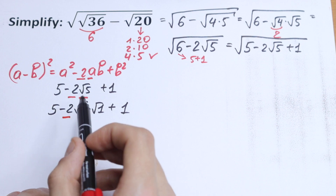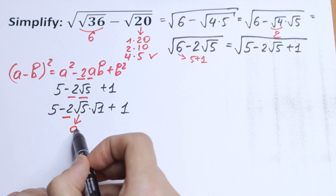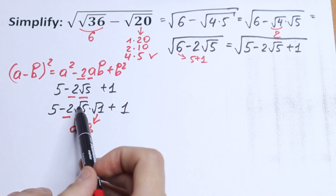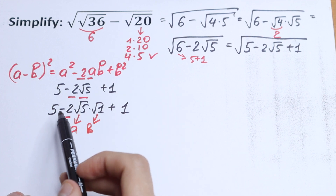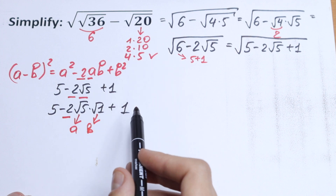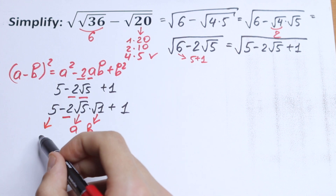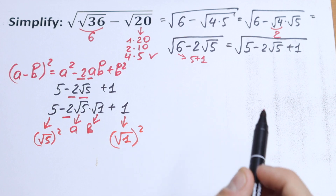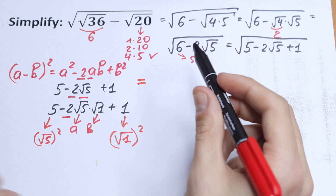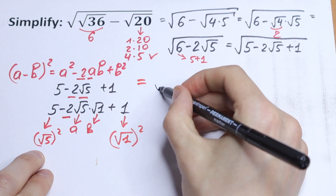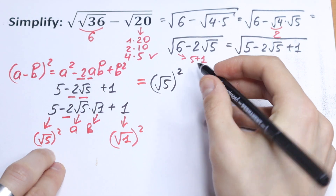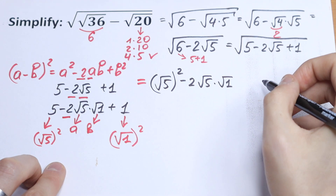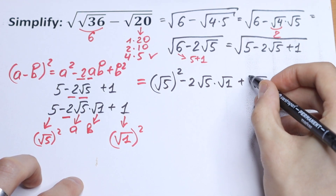We have a 2 and 2 right here — this will be our a and this will be our b. But we have 5 and 1, and right here we have the square root of 5 and the square root of 1. We need to create a² and b². We can write 5 as the square root of 5 to the second power, and 1 as the square root of 1 to the second power. So we create the formula right here: (√5)² minus 2 times √5 times √1, plus (√1)².